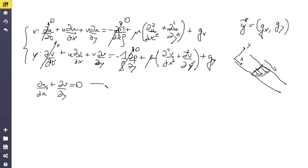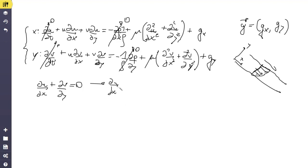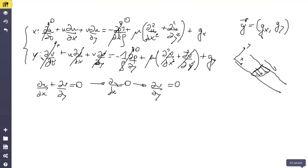From the continuity equation, since du/dx = 0, we get dv/dy = 0 as well, so that term vanishes. Because there is no variation in the x-direction, the convective terms also vanish. Since there is no v-component, that term vanishes too, and we do not need to consider the y-momentum equation further.